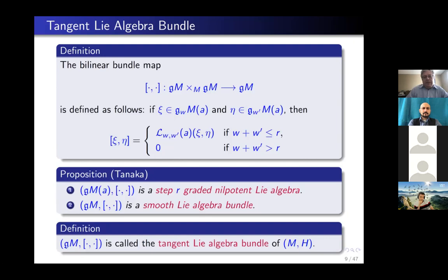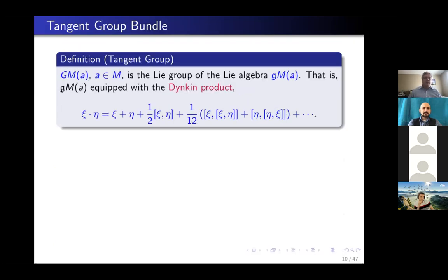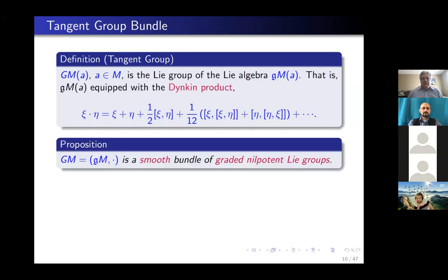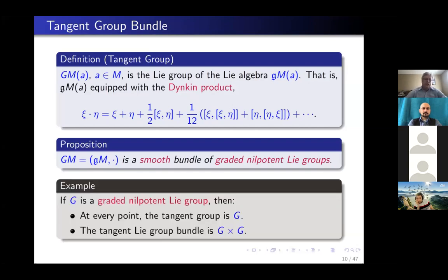From the tangent Lie bracket bundle, you get a tangent group bundle. Define GMA at a point A — this is the tangent group at A. It's a Lie group whose Lie algebra is FRACT GMA. Essentially this is FRACT GMA equipped with the Dynkin product, so the Lie group and Lie algebra are the same as manifolds, and you require the exponential map to be the identity. This way you get a smooth bundle of graded nilpotent Lie groups. Example: if G is a graded nilpotent Lie group, at every point the tangent group can be identified with G, and the tangent group bundle is a trivial product G × G.